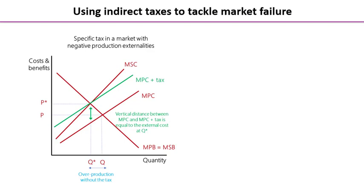Now if we decide to introduce a tax, in this case we have a unit tax or a specific tax. That means the marginal private cost curve, which is effectively a supply curve, shifts upwards by the amount of the tax. We've done a parallel shift and that new line is labelled MPC plus tax, so we end up with our equilibrium at the socially optimal point.